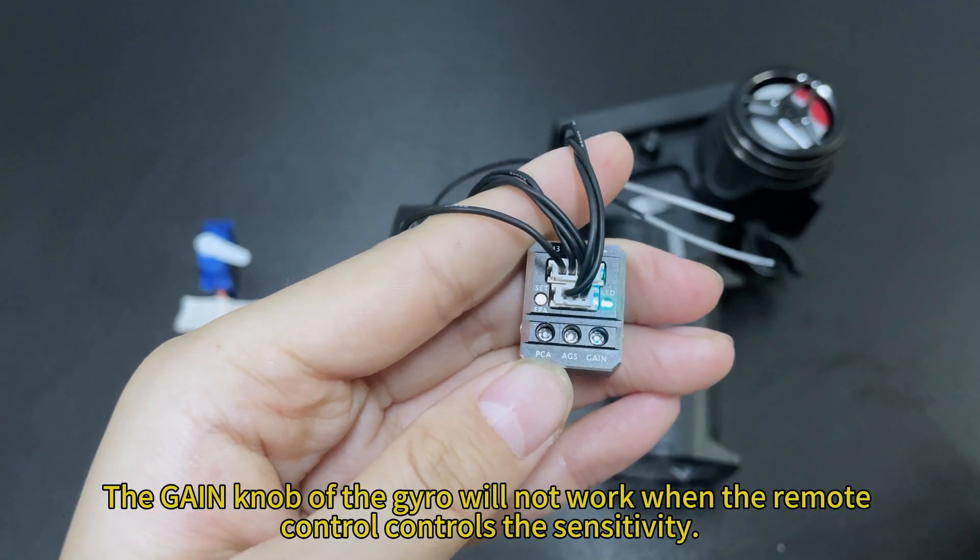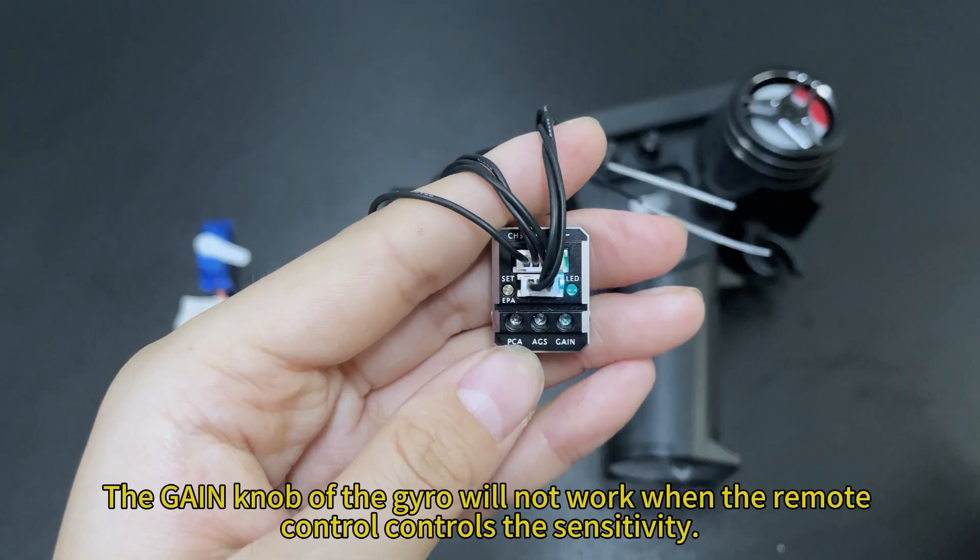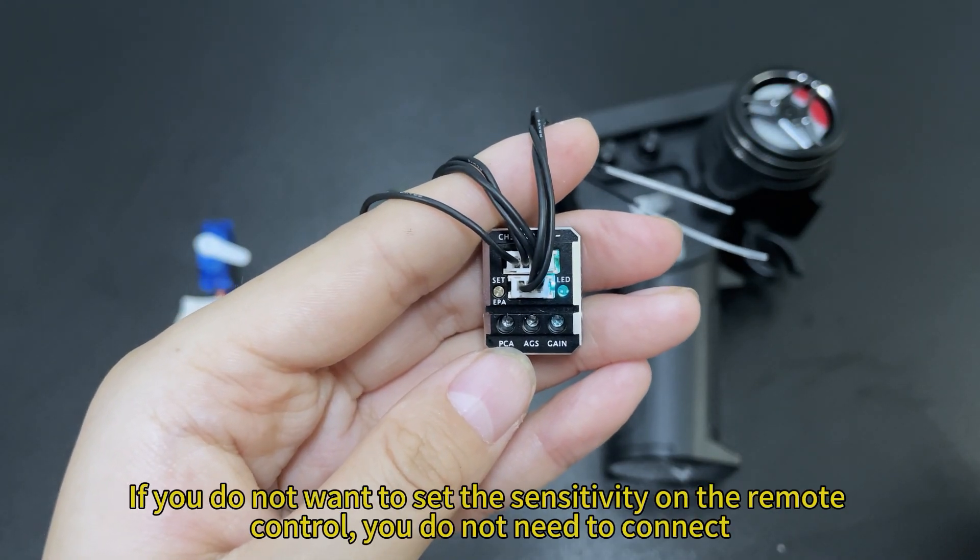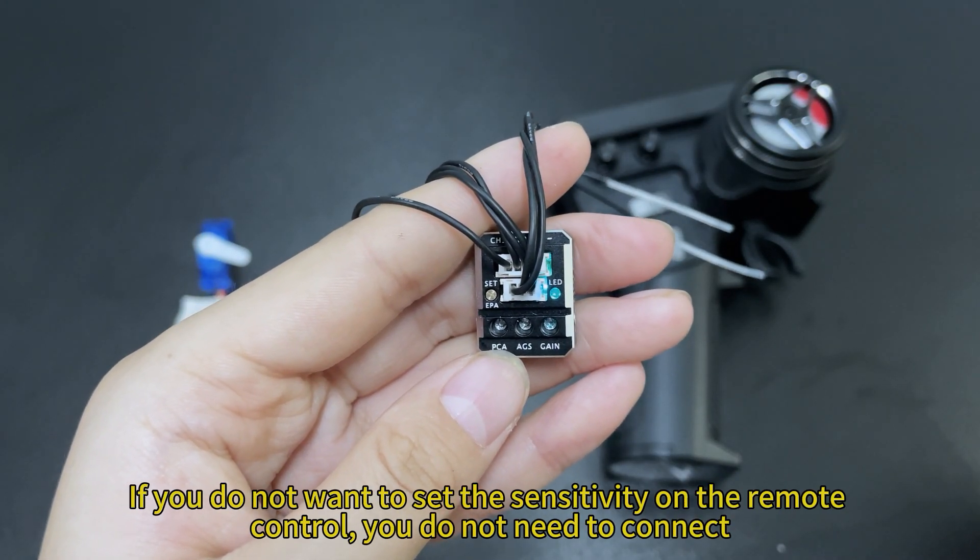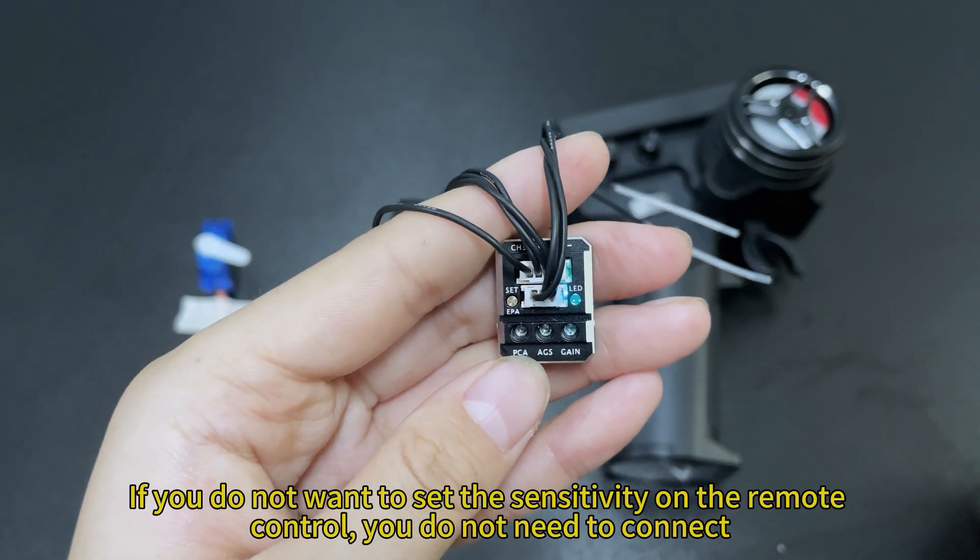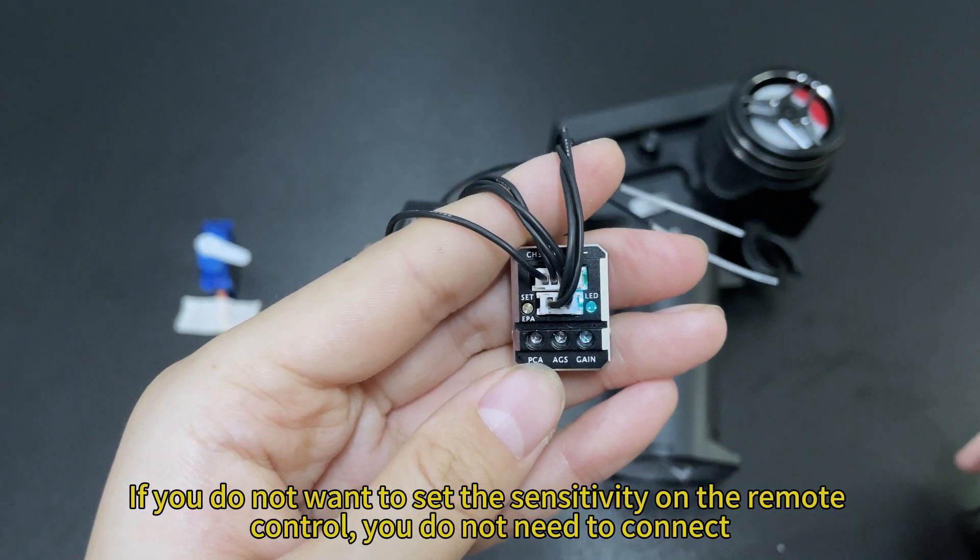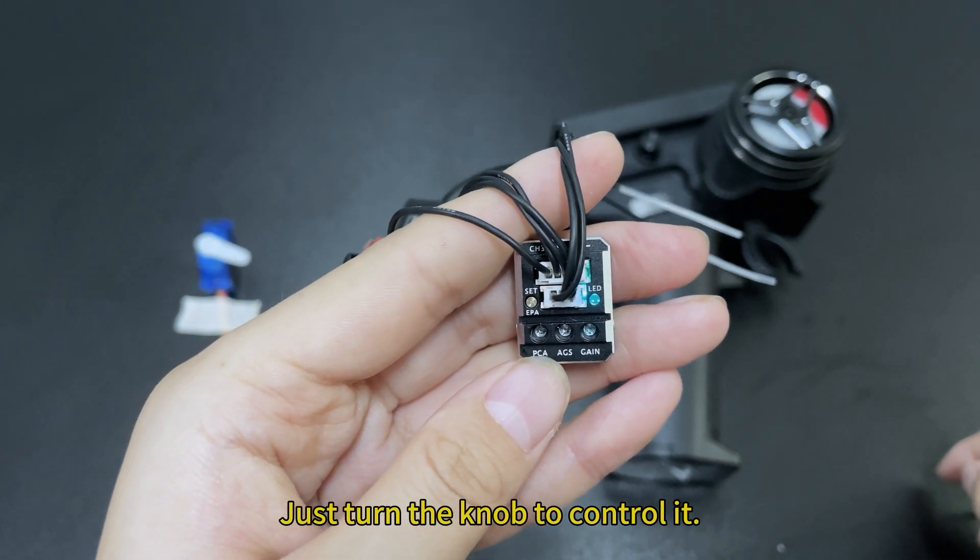The Gain knob of the gyro will not work when the remote control controls the sensitivity. If you do not want to set the sensitivity on the remote control, you do not need to connect. Just turn the knob to control it.